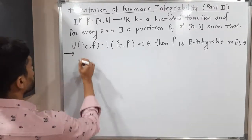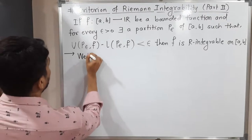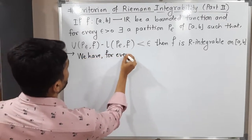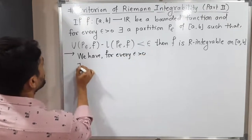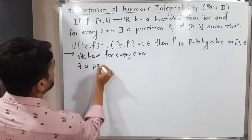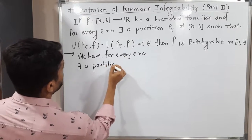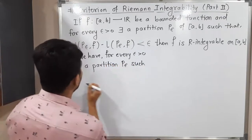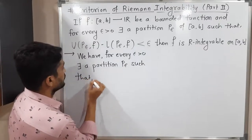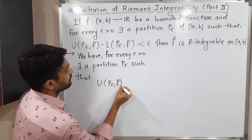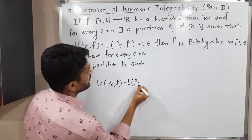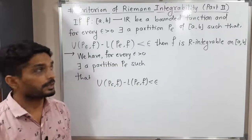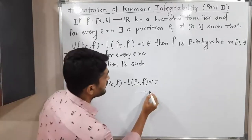First, I will write the given information. We have: for every epsilon greater than 0, there exists a partition P-epsilon such that U(P-epsilon, F) minus L(P-epsilon, F) is less than epsilon. I will call this equation 1.